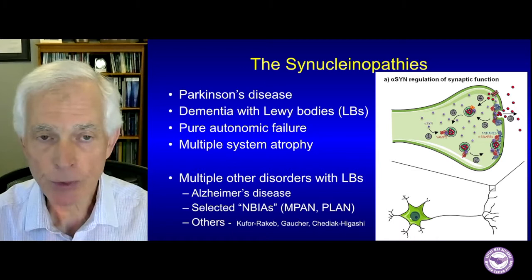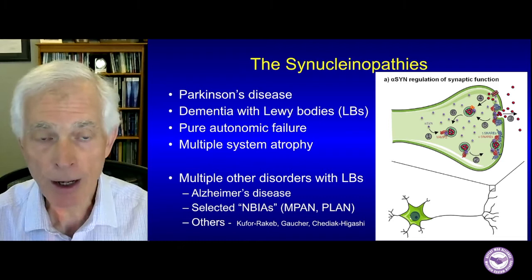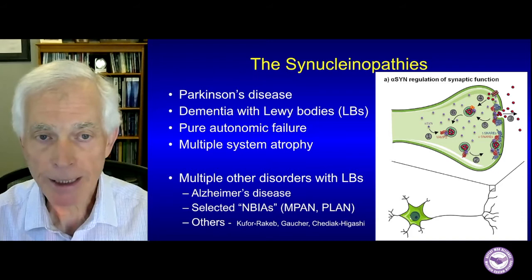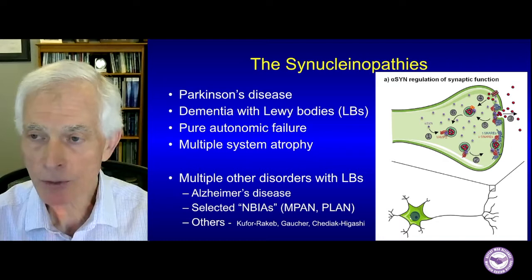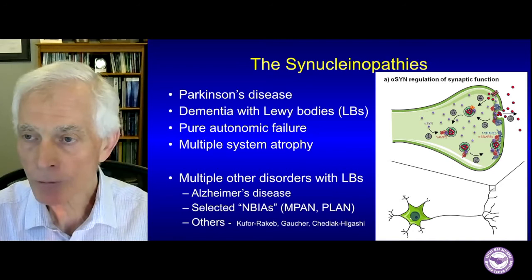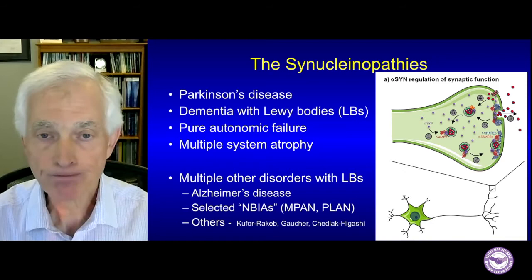Multiple system atrophy is one of the neurodegenerative conditions we now call a synucleinopathy. The four commonest synucleinopathies include Parkinson's disease (the most common), dementia with Lewy bodies, pure autonomic failure, and multiple system atrophy. Alpha-synuclein is a normal protein involved in synaptic function — the way nerve cells talk to each other — particularly in the storage, release, and reuptake of neurotransmitters from the synapse.